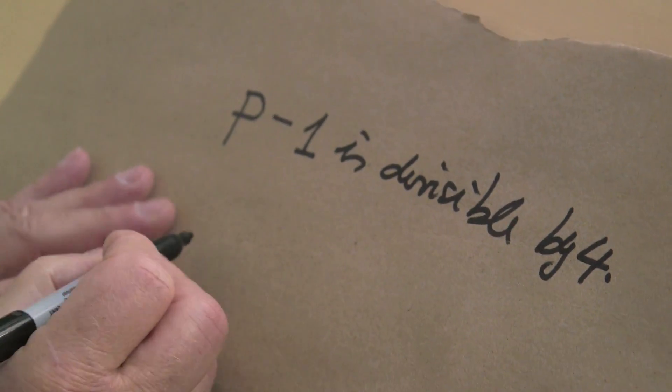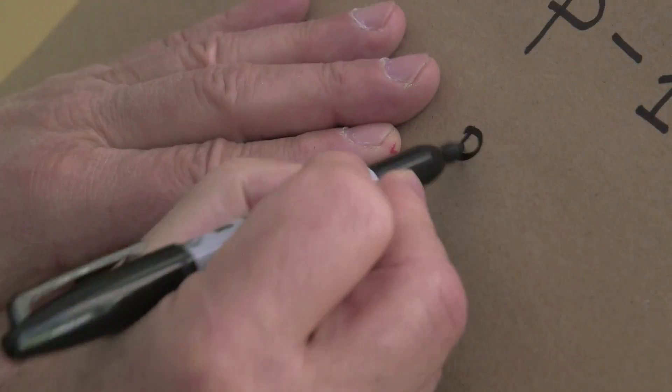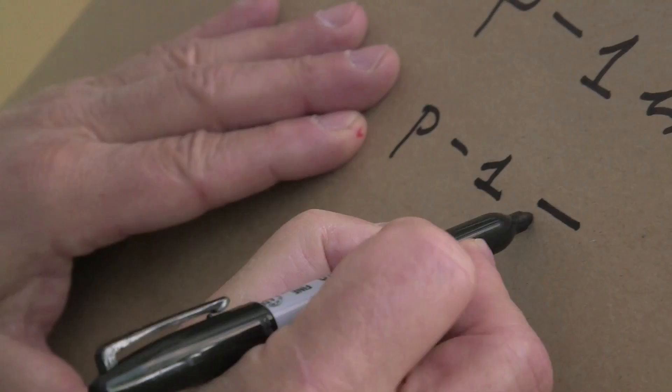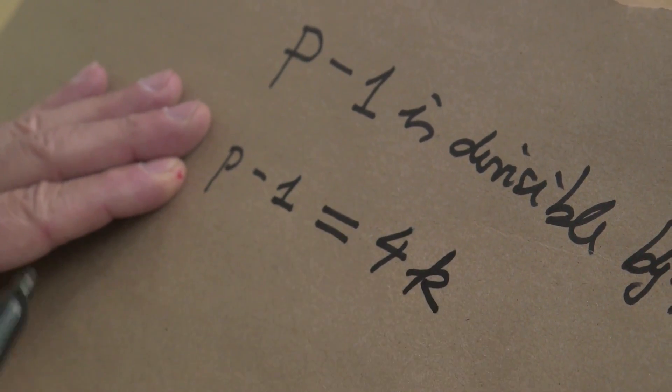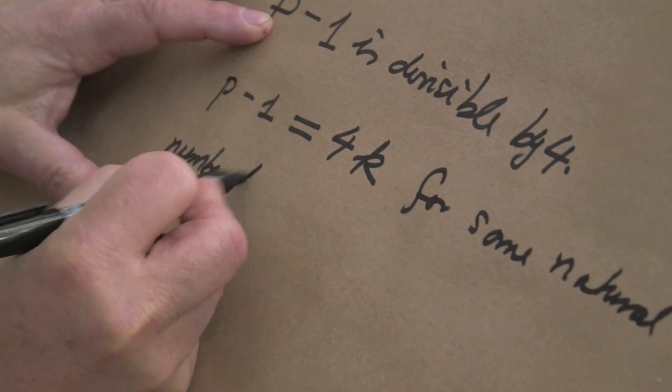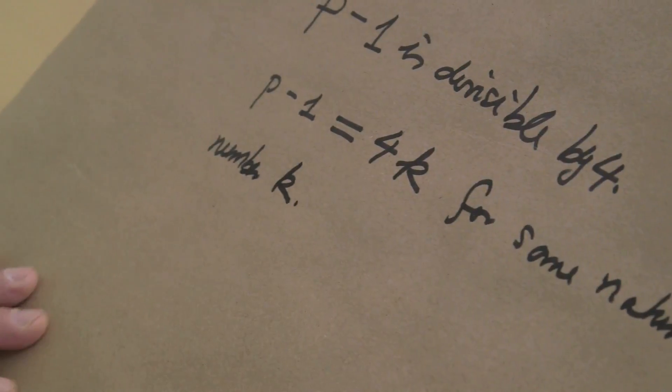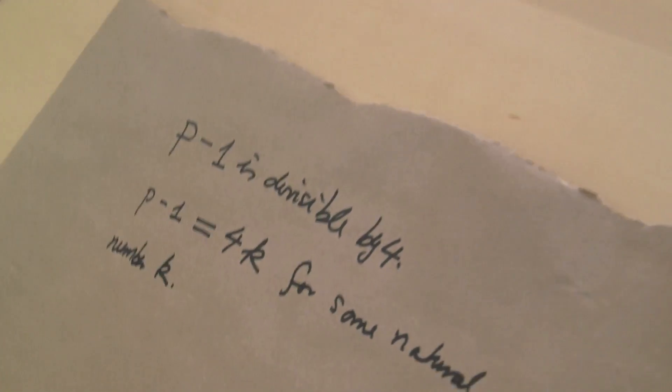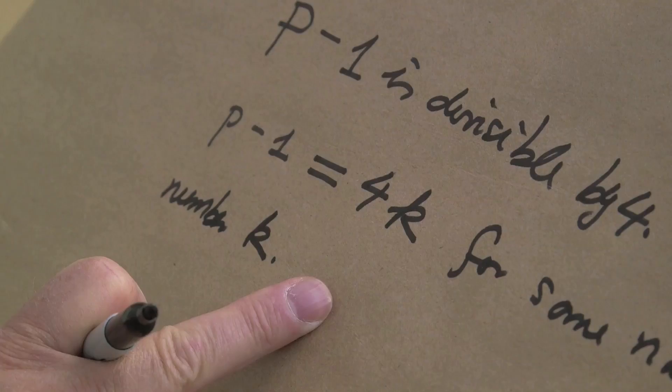So that means p minus 1 can be written as 4 times k for some natural number k. For example, if we take p equals 17, then p minus 1 is 16, and k would be 4.